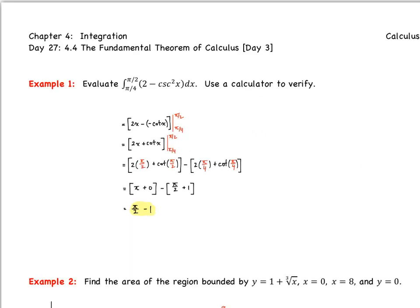Example two says find the area of the region bounded by y = 1 + ∛x, x = 0, x = 8, and y = 0. The first thing I want you to do is try to graph this region and shade the region you're trying to find the area for. Go ahead, give it a shot, and let's check back.